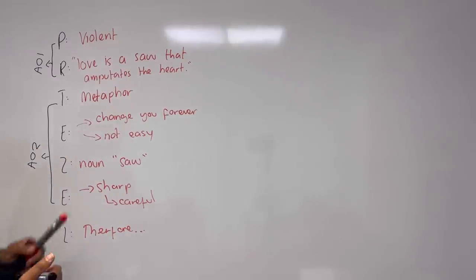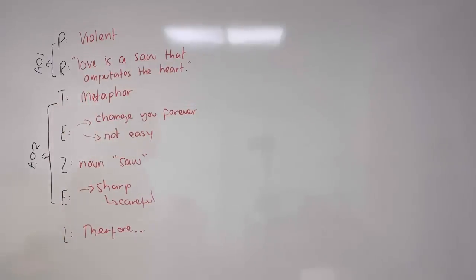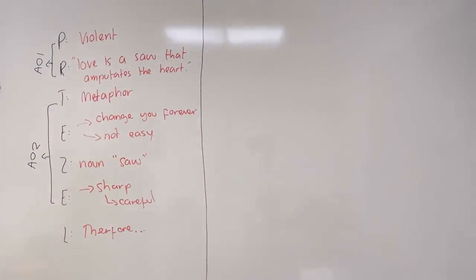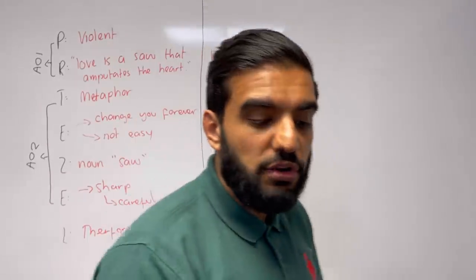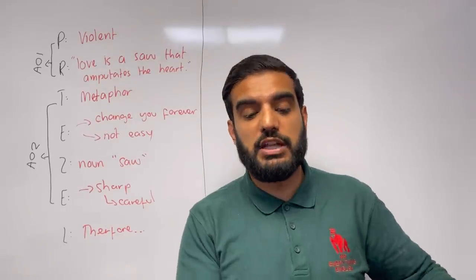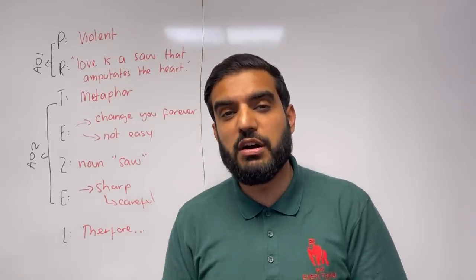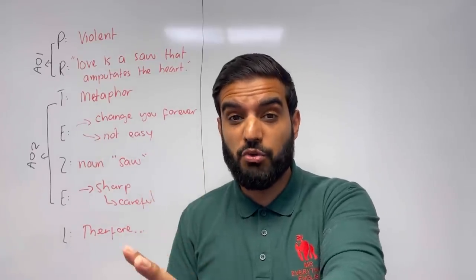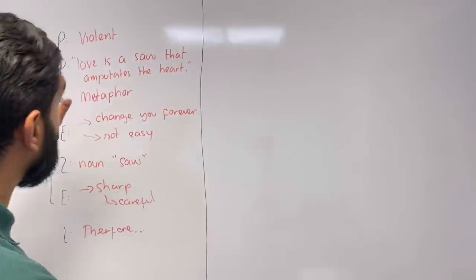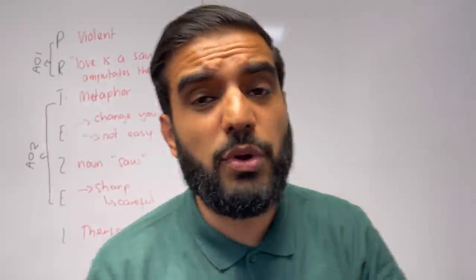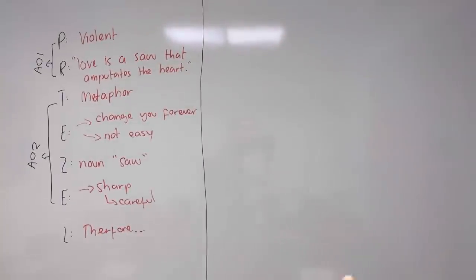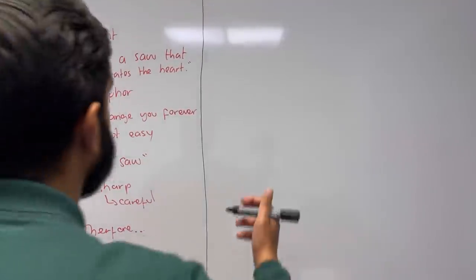Looking at my paragraph, the P and the R — this is AO1, and this here is AO2. AO1 is the quality of my point and the quality of my quote. AO2 is the effect of language, structure, and form. Now, I've had a change of heart — I think it's more beneficial if I plan one paragraph and then you plan the next two at home. On this side of the board I will write this paragraph out. The board is large so my detail isn't going to be as much, but let's begin.